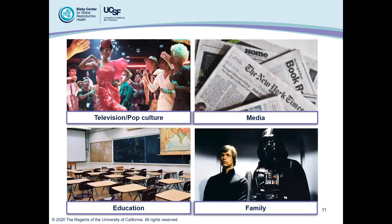Where do these biases come from? The short answer is everywhere. We've been getting these associations and learning about dominant cultural stereotypes from many different sources since we were very young — directly, indirectly, and without our consent. We get messaging from television, pop culture, media, education, our families, and social networks, and it gets to the point where we can't really pinpoint where some of these associations come from.